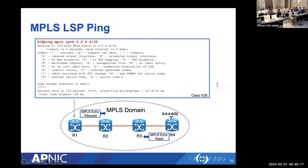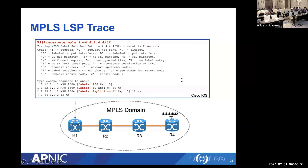Cisco IOS has MPLS ping and traceroute commands to diagnose the MPLS data plane. Here is an example of the MPLS ping command in Cisco IOS. And here is an example of the MPLS traceroute command — labels are shown in the traceroute output. Depending on your OS, most routers have an option to show the label, but Windows may not show labels. In the router you will see the label along the path.